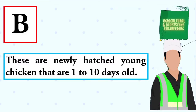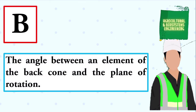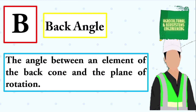We will begin with this definition. These are newly hatched young chicken that are 1 to 10 days old. The answer is: baby chicks. The angle between an element of the back cone and the plane of rotation. The answer is: back angle.